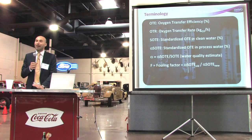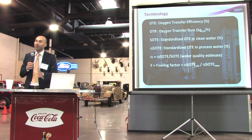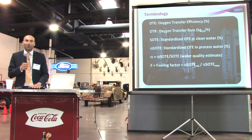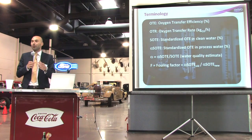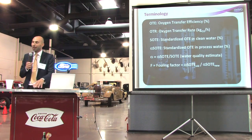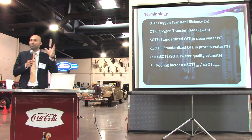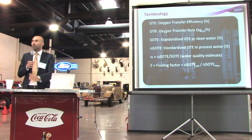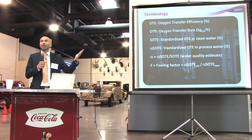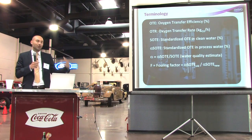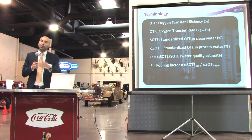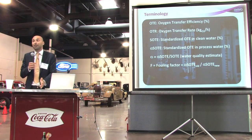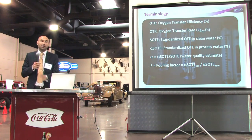Over time, diffuser efficiency inevitably goes down — just like a car runs well when new and loses efficiency over time. We measure alpha over time, or the alpha·SOTE product (your design value), starting from day one and then every three to six months or every year, watching a curve of alpha declining over time.